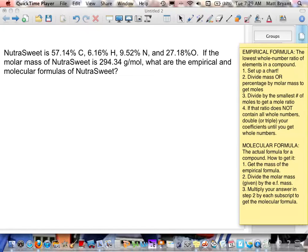We have a scenario here involving NutraSweet. This is the artificial sweetener that you have in Diet Coke, Diet Pepsi, all these sorts of diet foods. NutraSweet is 57.14% carbon, 6.16% hydrogen, 9.52% nitrogen, and 27.18% oxygen.